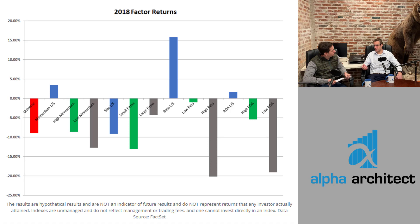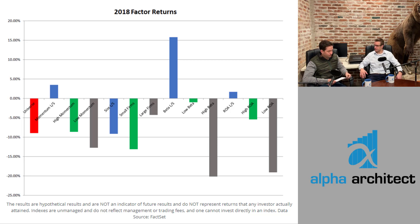Across factor investing, the two that did the worst were tilts towards value and size — at least looking at the Russell 1000, the top thousand largest stocks in the U.S. And again, it's only in the U.S. So take the flip side of that — what did the best would have been low beta, actually. The overall conclusion was just mainly to be descriptive and understand that, unfortunately, if you're tilted towards small cap value or value and small, it kind of makes sense why last year's returns occurred.